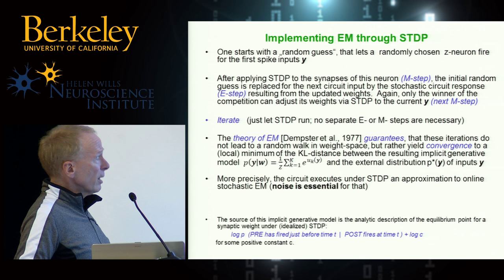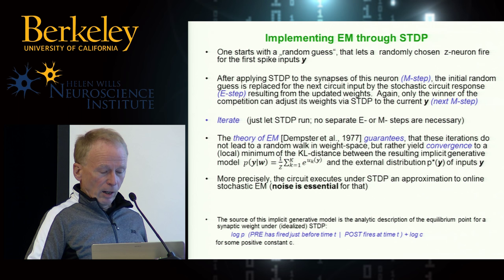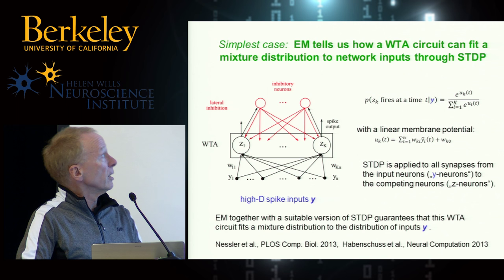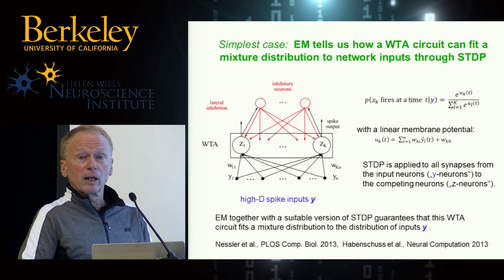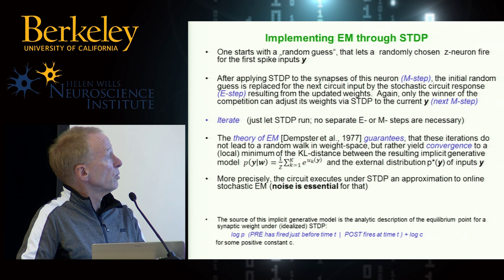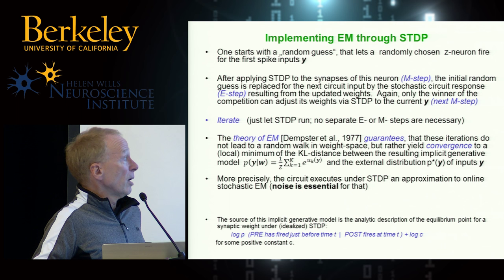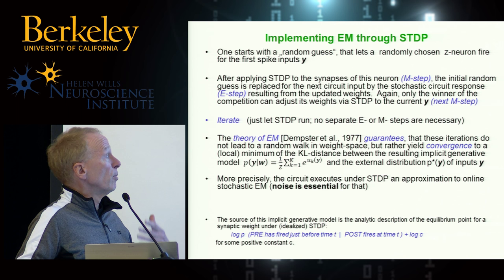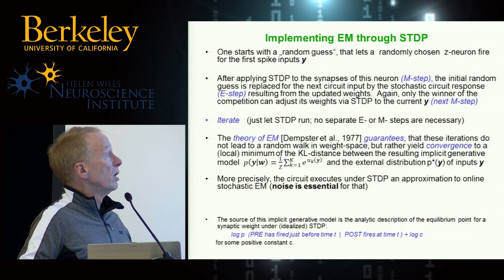There's also a very nice work by David Kappel, published last year, showing that in principle you can also apply this to HMM learning. Jeff Hawkins talked about the goal of really learning and predicting sequences, and this can be emulated here — you simply add synaptic connections among the competing neurons and apply the same STDP rule to all of them, giving a theoretical guarantee that it fits hidden Markov models to the sequence of input streams. The equilibrium weight can be interpreted in log conditional probabilities.